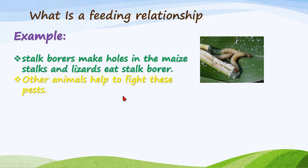Now, other animals help to fight these pests. For example, birds like to eat stock borers. If something is less in one area, the other area will go down too. Stock borers eat your plants. Birds love to eat stock borers, but if birds are gone and stock borers keep coming, they will destroy your plants.